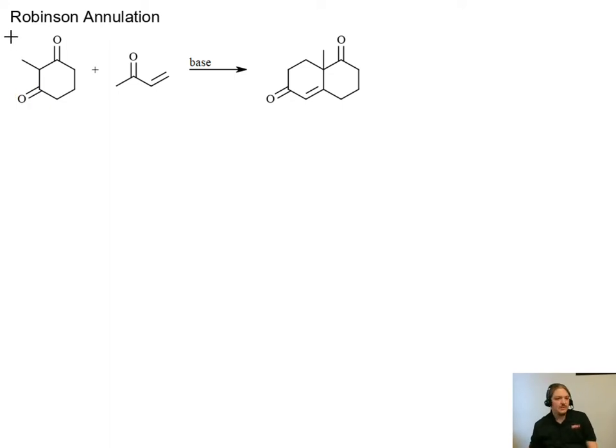The Robinson annulation requires a base. Generally, any base that is acidic enough to deprotonate this 1,3 diketone, which has a pKa somewhere in the low teens, and is then basic enough to promote the aldol reaction. Anything of that type is going to be sufficient. I'm going to use sodium hydroxide, which is basic enough.